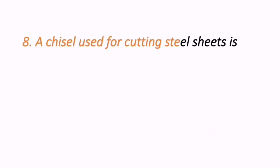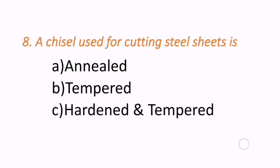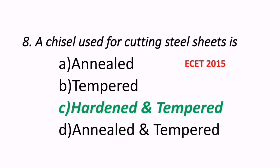Eighth question: a chisel used for cutting steel sheets is which type — annealed, tempered, hardened and tempered, or annealed and tempered? The correct answer is hardened and tempered; C is the correct answer. This question appeared in the 2015 ESET exam.